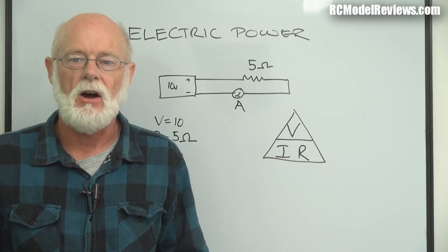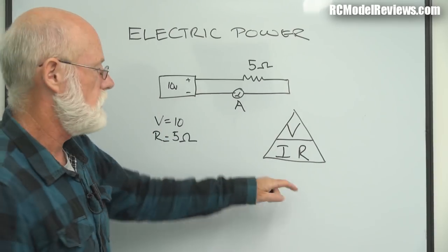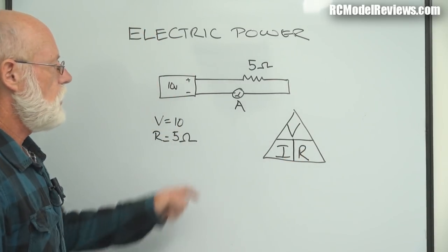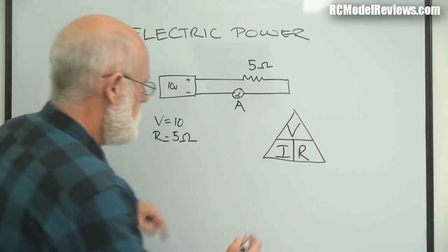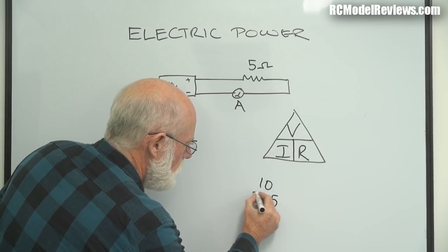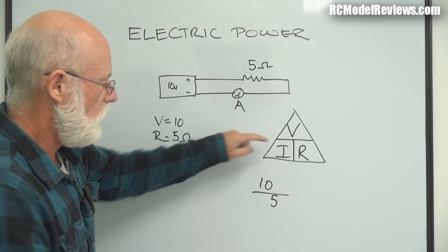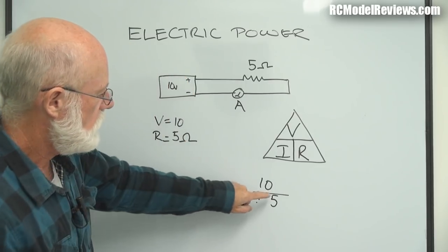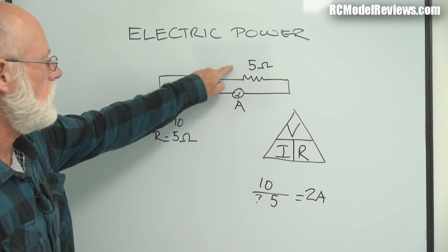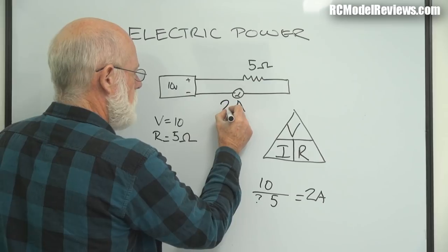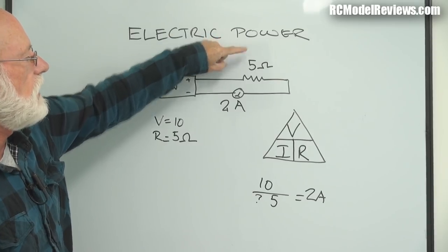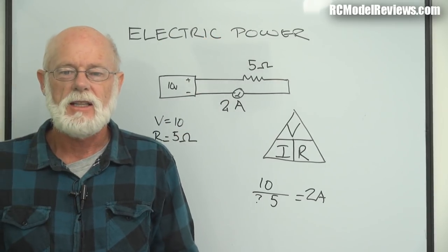In the Ohm's Law triangle: V, I (the symbol for current), and R. We know V is 10 and R is 5. To find the current I, we divide 10 by 5, which gives us 2 amps flowing in this circuit. With a pressure of 10 volts and a resistance of 5 ohms, the actual flow will be 2 amps. Simple - just basic division.